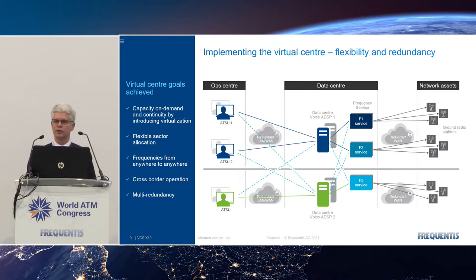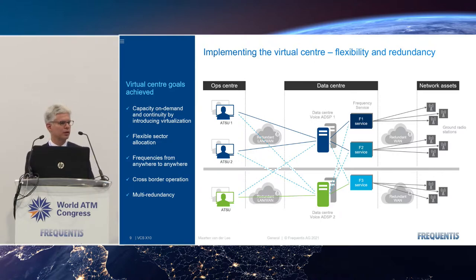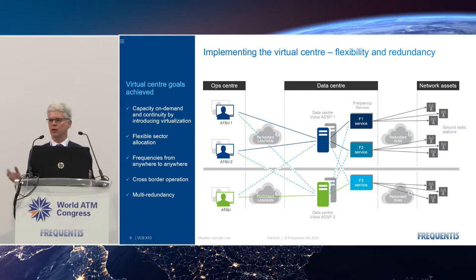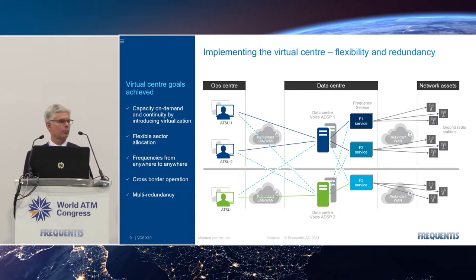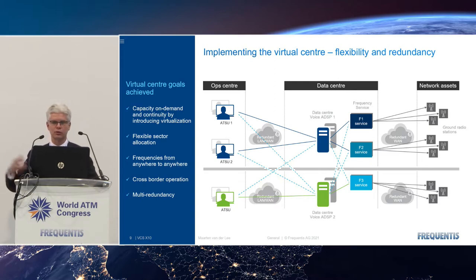If there is a disaster in one data center or network connectivity is lost, you can still operate using a different data center — the same airspace from the same control room. This creates different contingency scenarios: operate the same airspace from a different contingency control room, or use a contingency data center. You could even imagine the data center being located in another country for cross-border operation, while the controller works the way they're used to without new procedures.